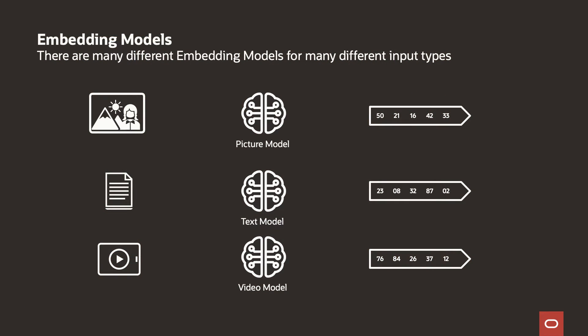Different embedding models generate different vectors. There are many different embedding models that you can use, and you would use a different model for embedding picture information, text information, or video information. The important thing is that different models generate different vectors and those different vectors cannot be compared with each other. You can only compare vectors that are generated by the same model.